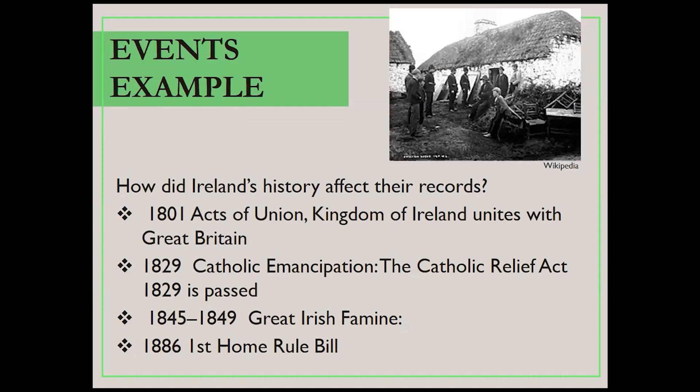Here are a couple of instances that would be very important while you're researching. In 1801, we have the Acts of Union, where Ireland became part of the United Kingdom. In 1829, we have the Catholic Emancipation or Catholic Relief Act. Then in the middle, we have the Great Irish Famine in the 1840s, as well as the first Home Rule Bill in 1861, where the Irish were trying to become self-governing — they wanted to break away from England and rule themselves. So that is also going to affect records in the country.